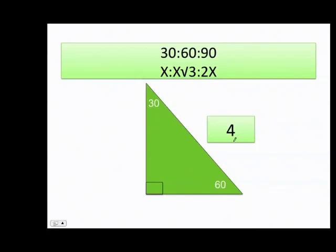The hypotenuse is 4. For the 30-degree angle I take half of that, which is 2, and the 60-degree angle is 2 times the square root of 3.